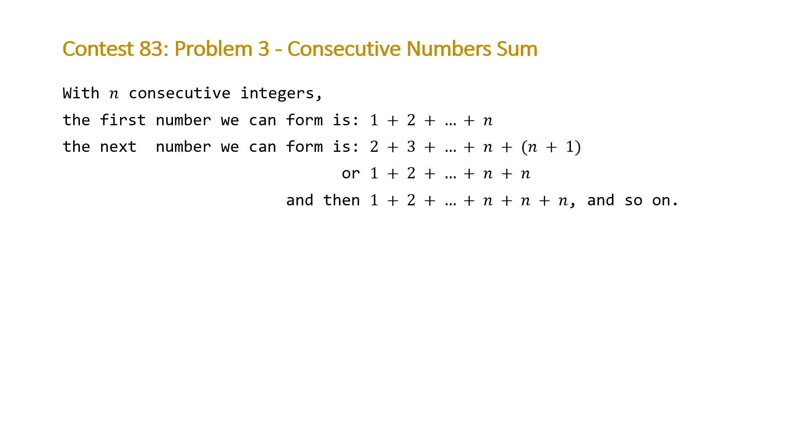An alternative solution which I found in the discussion forum I think is much cleaner and much simpler. It was pointed out by a contestant that with N consecutive integers, the first number we can form is 1 plus 2 to N, and the next number we can form is 2 plus 3 plus N plus (N+1), or 1 plus 2 plus N plus N, just adding an N to the initial first number. Then the next number after that is just N added on to the previous number.